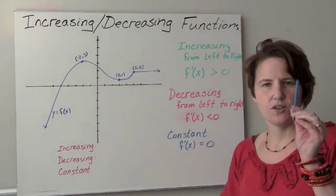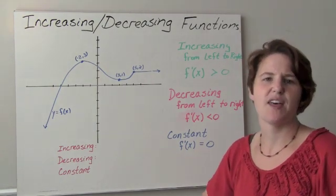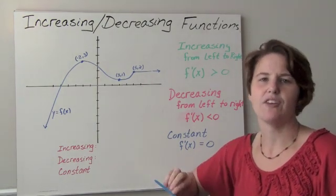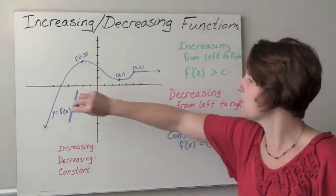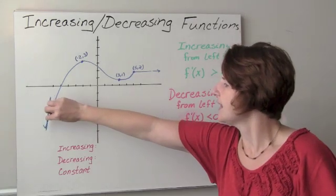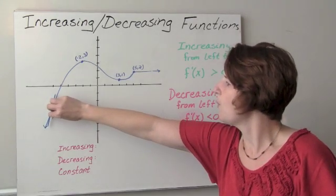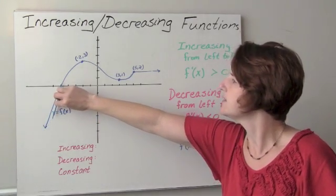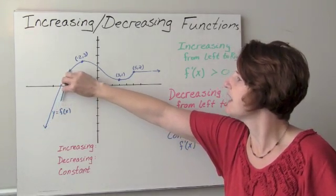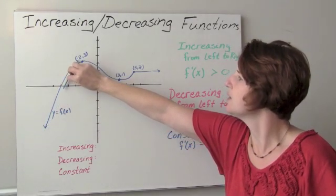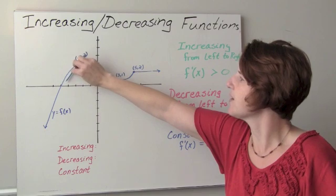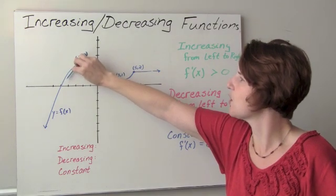Using my stick, remember that derivative means slope, and at every point to the left of negative 2, I have a positive slope.